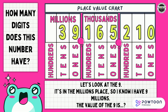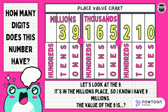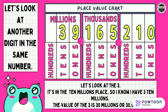How many digits does this number have? That's right — it has 8 digits. Let's look at the 9 — it's in the millions place, so I know I have 9 millions. The value of the 9 is? Think, then respond. That's right — the value is 9 million. Let's look at the 3 — it's in the ten millions place, so I know I have 3 tens millions. The value of the 3 is 30 million or 3 tens millions.